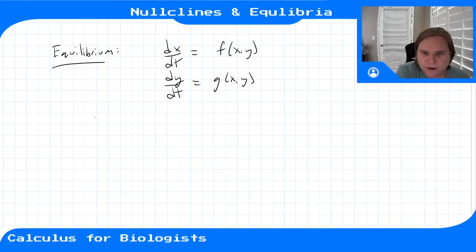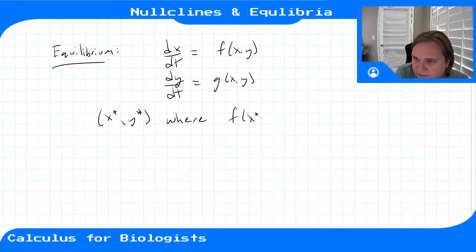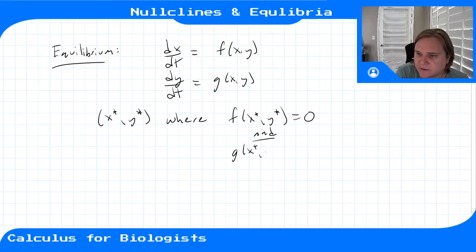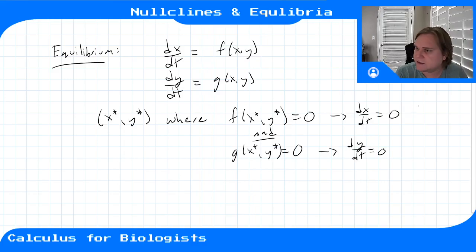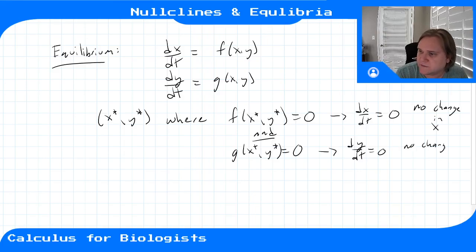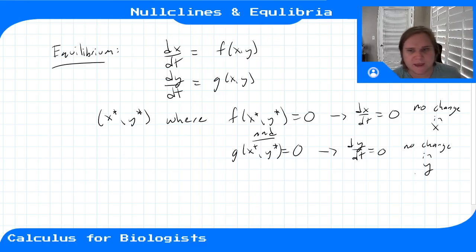To find the equilibrium point, we need a point (x*, y*) where both f(x*, y*) = 0 and g(x*, y*) = 0. The first condition implies no change in x, and the second implies no change in y. At that point, neither variable is changing in time — that's what makes it an equilibrium point.